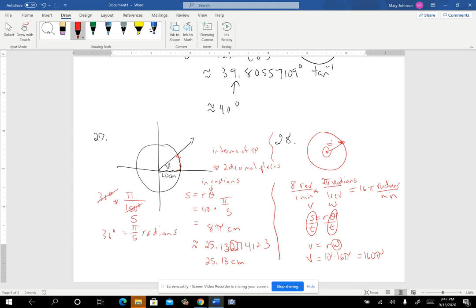And then if I take 160 times pi, I get about, and they said one decimal place on that one. So I get about 502.7, and it was feet. 502.7 feet. And that would be a speed. So that would be feet per minute.